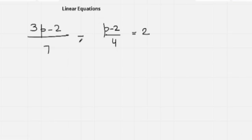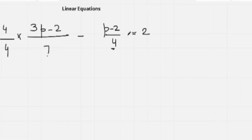In this next question we have fractions. To solve with fractions, first we need to make the denominators the same. I multiply each fraction by the denominator of the other: here I have 4 so I multiply by 4, and here I have 7 so I multiply by 7. The common denominator becomes 28.